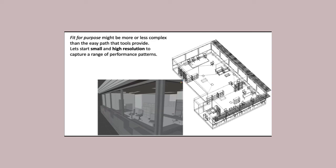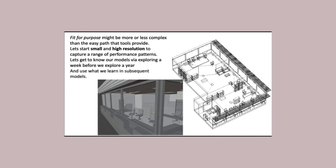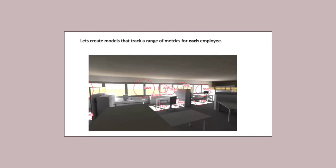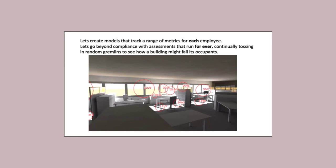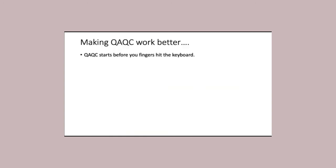Model fit for purpose might be more or less complex than the easy paths that tools provide. Let's start small and high resolution — everything in this thing is thermally active, it's actually real: radiation view factors, paper in the cabinets, books on the shelves, sensors at each point, each workstation. That's a small portion of an office building, but I can answer lots and lots of questions from that. Let's create models that work for the employees of that company — go beyond compliance and have assessments that essentially run forever, tossing out random gremlins to see how a building might fail its occupants, and when it finds a failure, ask what we'd like to do about it.